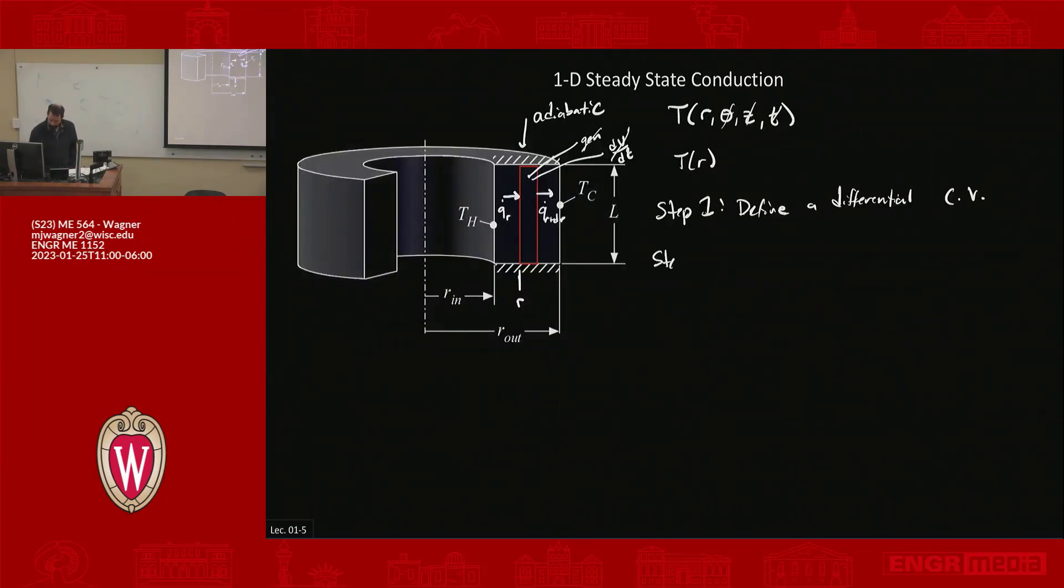Step two is we will do the first law of thermodynamics. Do an energy balance. The energy balance generally is anything coming in, plus anything that's generated, has to be equal to anything that's going out, plus anything that's stored. So I go back and I'll look at what's coming in. Well, that is Q dot R. What's going out? That is Q dot at R plus DR. So that's our very simple energy balance.